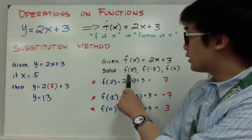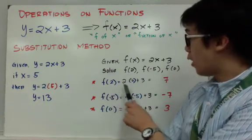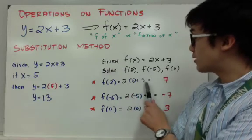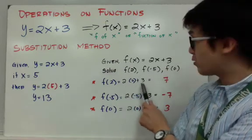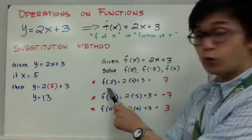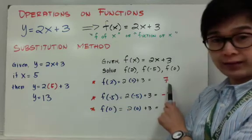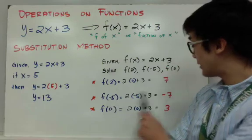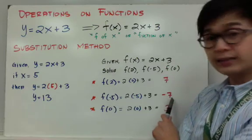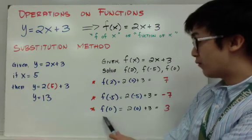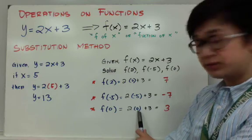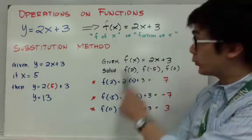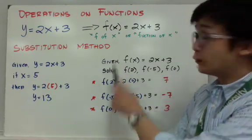For the first function, f of 2, simply substitute the value of 2 to x. You have 2x plus 3, so now you have 2 times 2 plus 3. Therefore, f of 2 is equal to 7. If you have f of negative 5, f of negative 5 is equal to negative 7. And f of 0 — replace x by 0 — is equal to 3. This is how we substitute using the new notation.